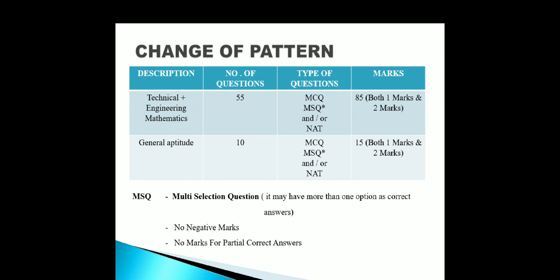Regarding changes in the exam pattern: there are 65 questions total. General Aptitude will have 10 questions, and Technical plus Engineering Mathematics will have 55 questions. The types of questions are Multiple Choice Questions (MCQ), Multiple Selection Questions (MSQ), and Numerical Answer Type (NAT) questions. MCQs and MSQs carry 1 mark and 2 marks. Technical and Engineering Mathematics is 85 marks, and General Aptitude is 15 marks.